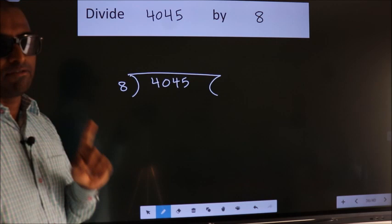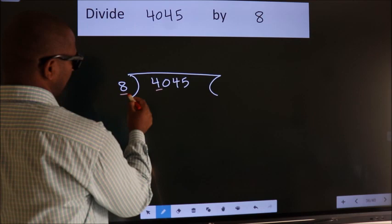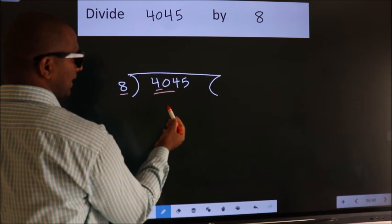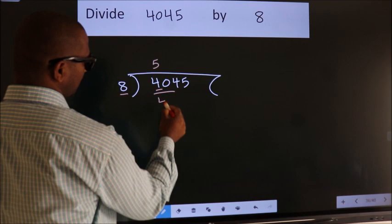Next. Here we have 4, here 8. 4 is smaller than 8, so we should take two numbers: 40. When do we get 40 in 8 table? 8 fives 40. Now we should subtract. We get 0.